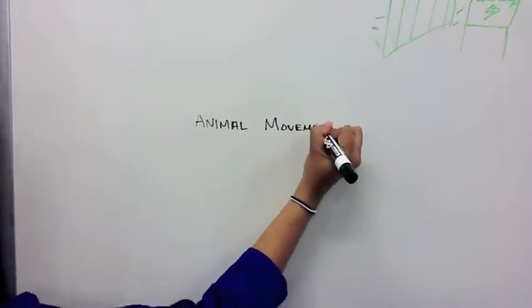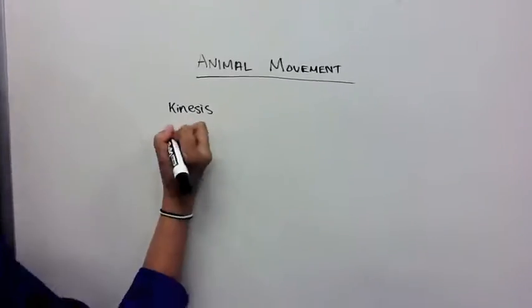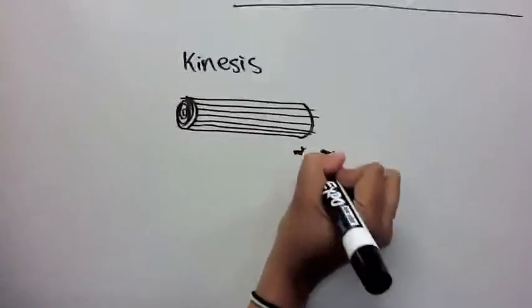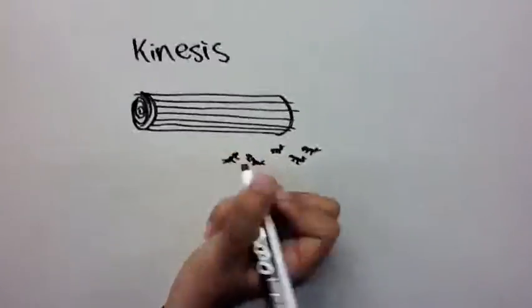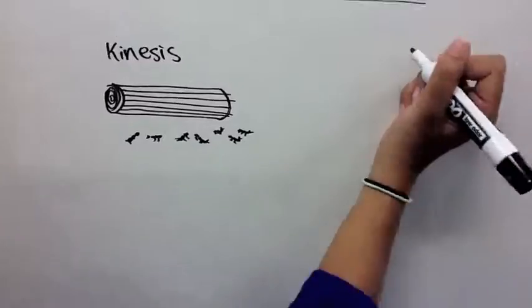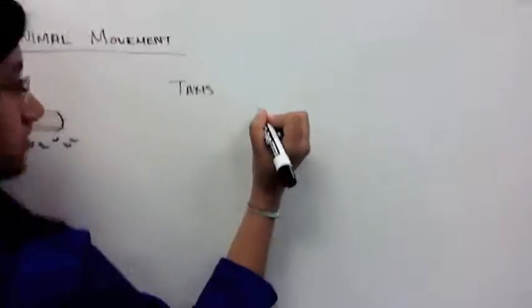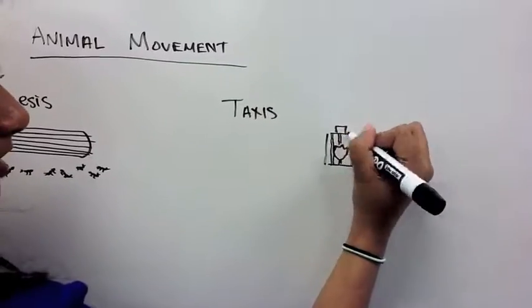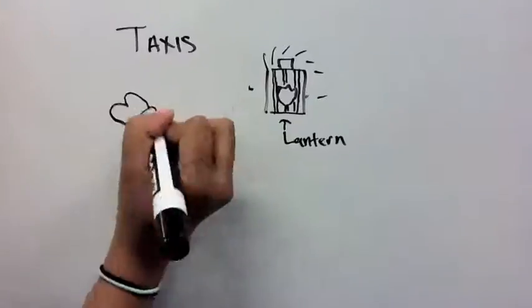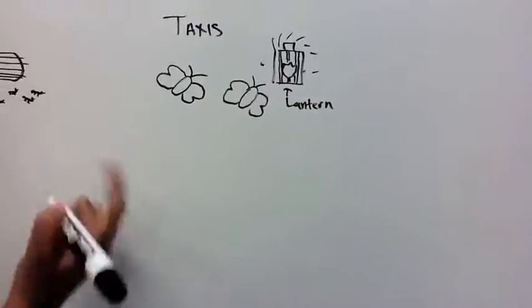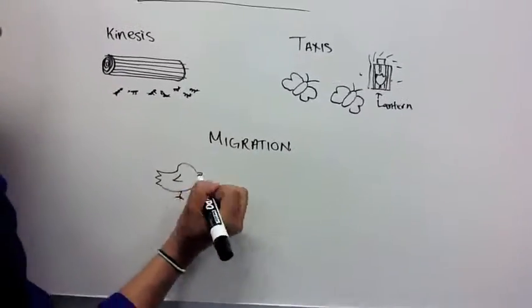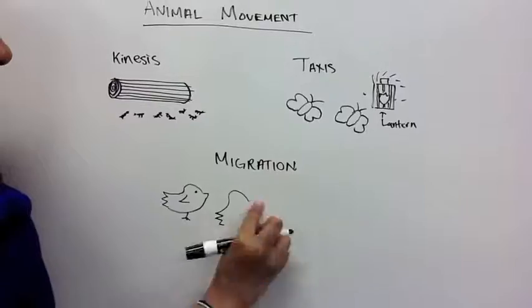Animal movement includes kinesis, taxis, and migration. Kinesis is an undirected change in speed of an animal's movement in response to a stimulus, like when animals will suddenly scurry when a log is lifted. Taxis is a directional movement in response to a stimulus, like when a moth moves towards light at night. Migration is the long-distance seasonal movement of animals, like when birds fly away.